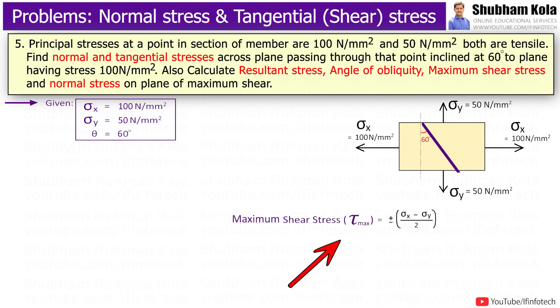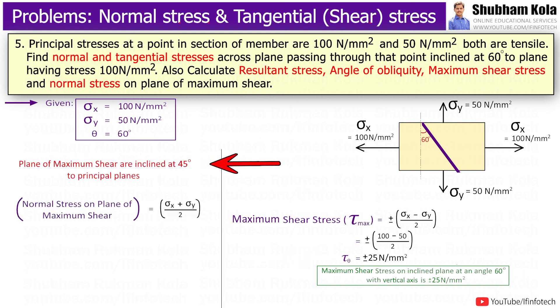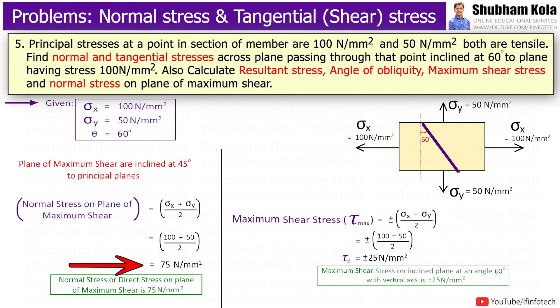Maximum shear stress = (sigma_x − sigma_y) / 2. Substituting sigma_x and sigma_y gives maximum shear stress of +25 N/m² and −25 N/m², with the planes of maximum shear inclined at 45 degrees to the principal planes. The normal stress on the plane of maximum shear is (sigma_x + sigma_y) / 2 = 75 N/m².